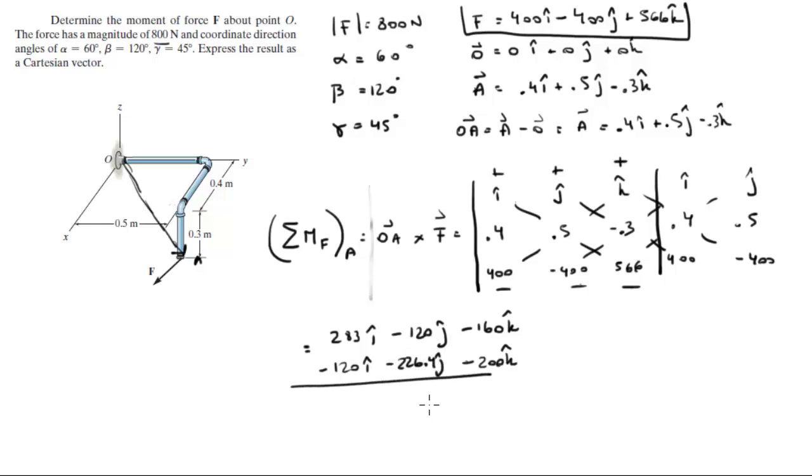When you add this together, you get that the moment is equal to 163 in the i, minus 346.4 in the j, minus 360 in the k. Final answer for the moment that F creates about O.